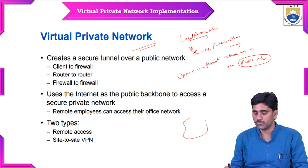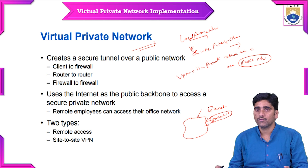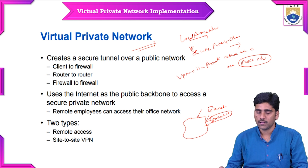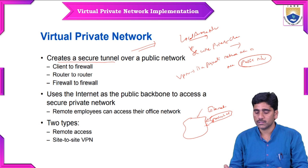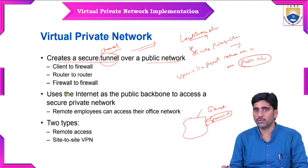When we are using the public internet, we are going to use a private network — that private network is called a Virtual Private Network. So how the Virtual Private Network is established on the public internet: it creates a secure tunnel, a secure channel, over a public network.